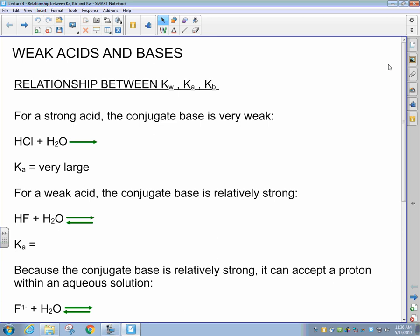This states whether or not you have products favored or reactants favored within the chemical reaction. You also have weak bases that have Kb values.